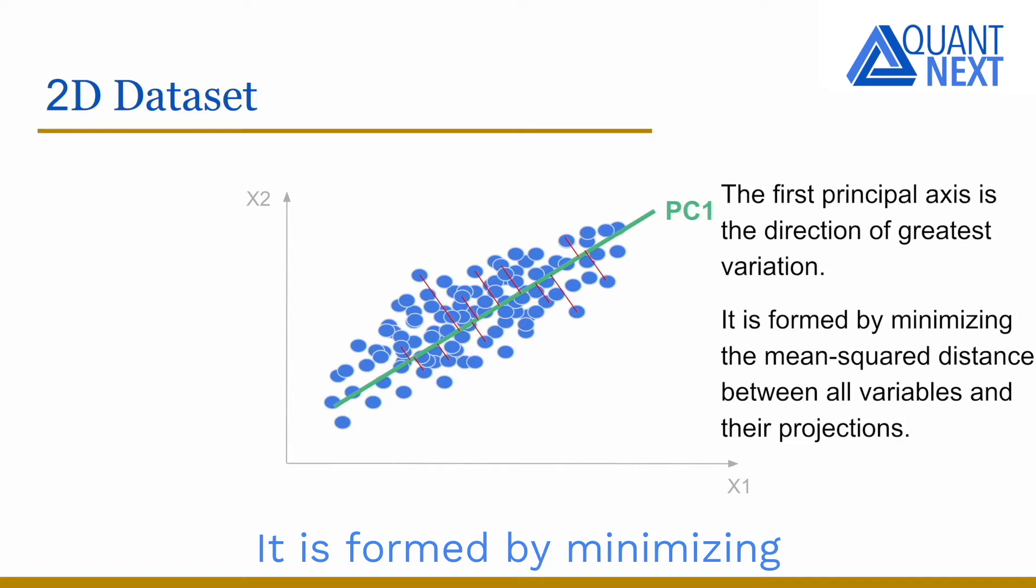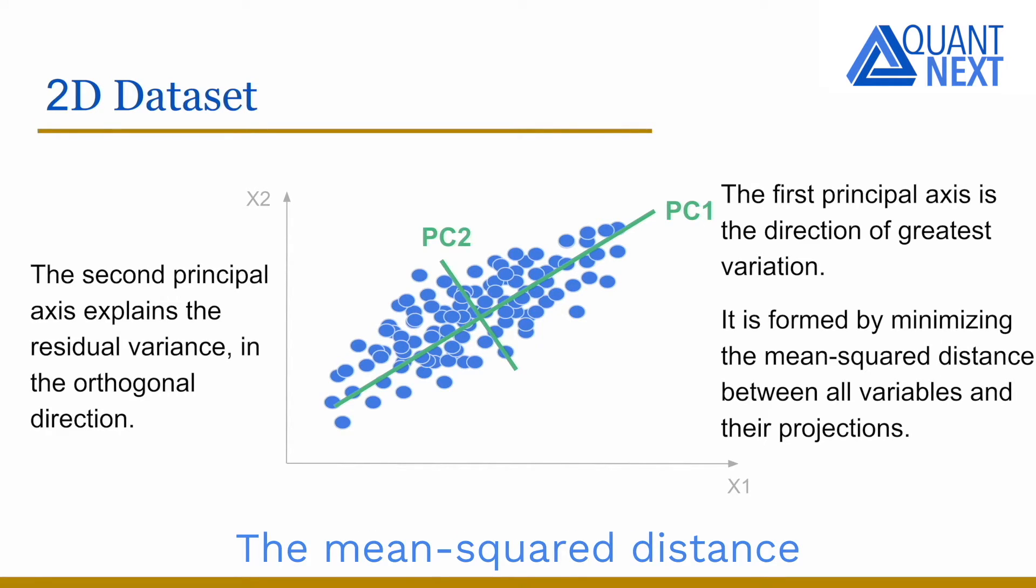It is formed by minimizing the mean-squared distance between all variables and their projections. The mean-squared distance tells you how much variance the first principal component doesn't explain. It is explained by the second one in the orthogonal direction.